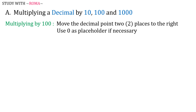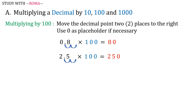When multiplying a decimal by 100, move the decimal point two places to the right, and use 0 as a placeholder if necessary. For example: 0.8 times 100 is equal to 80; 2.5 times 100 is equal to 250; 17.3 times 100 is equal to 1730.